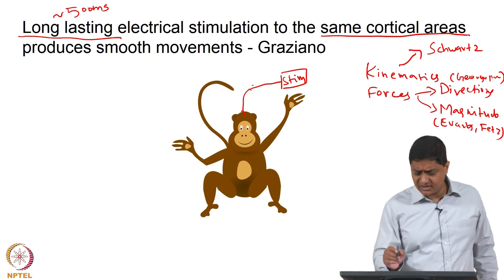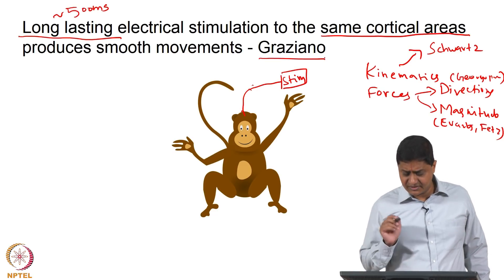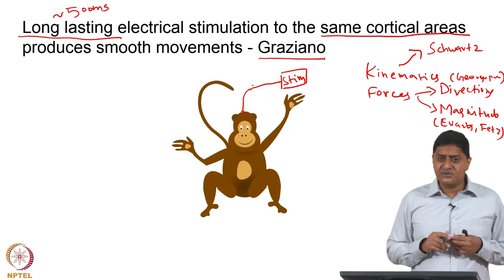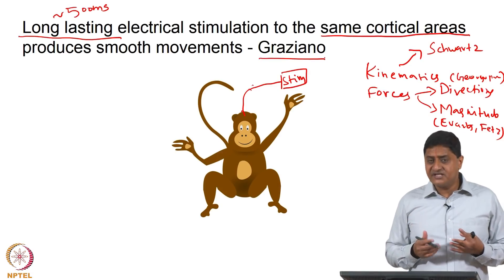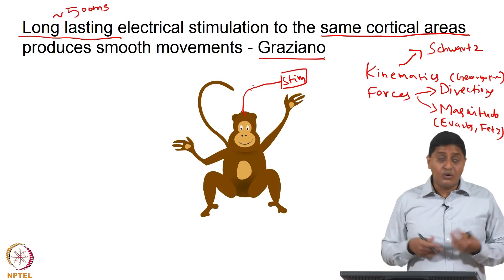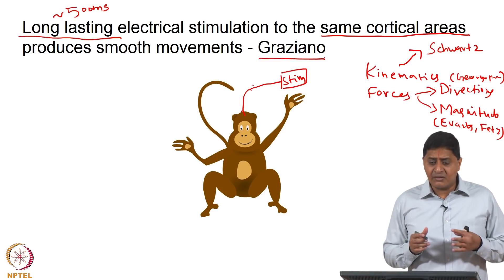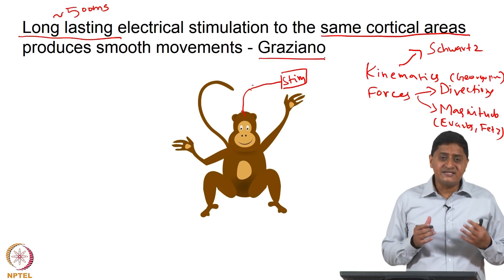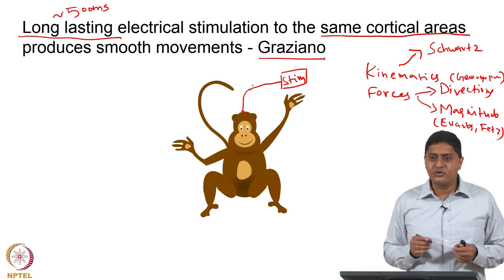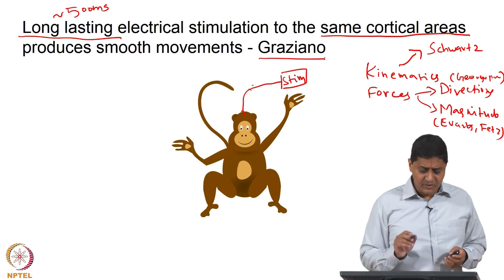This idea has received support — this was the work of Graziano, and it has been supported by several other studies. This leaves us with the question: what exactly is encoded in the primary motor cortex? We have seen earlier it is kinematics, we have seen it is kinetics, and now we are saying well-coordinated movements. It seems like there are multiple roles — evidence points to multiple directions — and there is still considerable debate in the field.